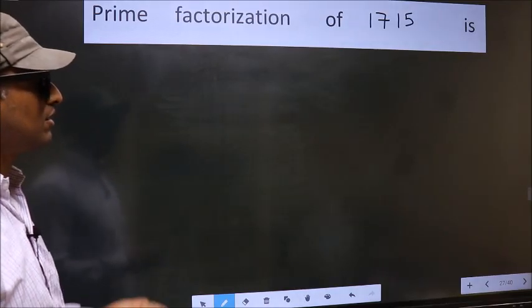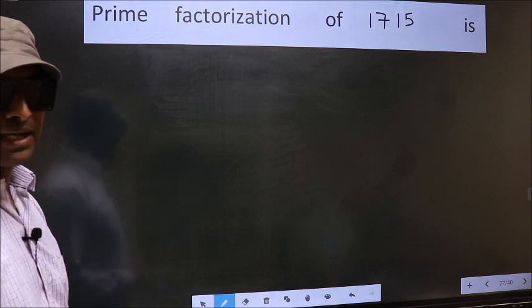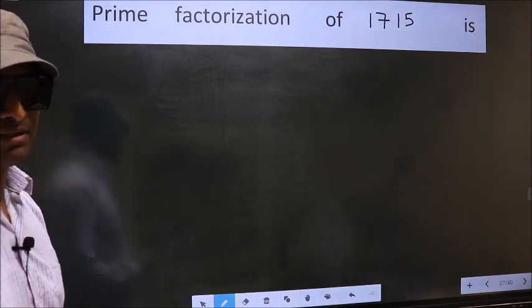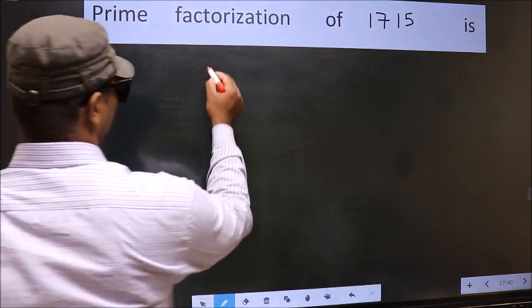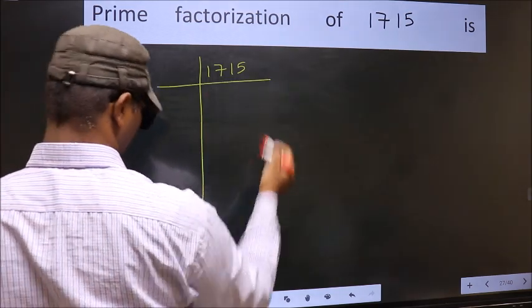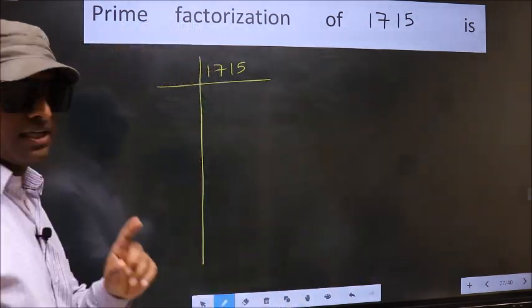To find the prime factorization of 1715, first we should frame it in this way. Write 1715. This is your step 1.